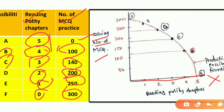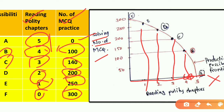For example, we plot these points: five chapters with zero MCQs, then four chapters with some MCQs, and so on up to the point of 100 MCQs. We label these points A, B, C, F — these represent the maximum production possibilities. When we connect these points, we get a curve, and we call it the production possibility frontier curve.